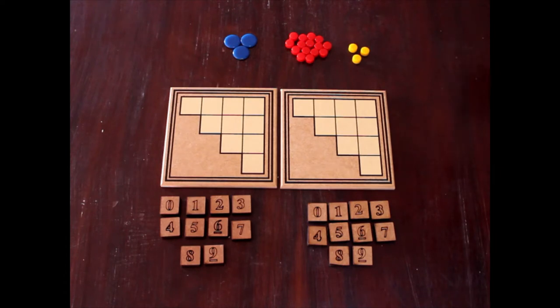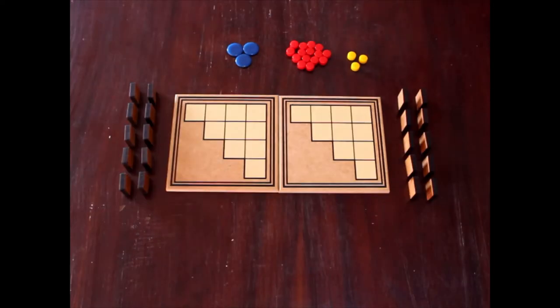Let's see how a single confrontation works. The two players mix their numbered squares and place them standing in front of them.